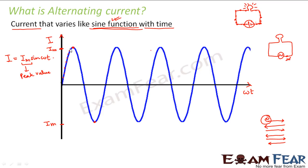The current is changing its magnitude continuously, so we have something called the peak value of current, which tells us that the current is changing its magnitude with time but will vary between two fixed values — it cannot go beyond these. In DC current you have just one current value; in AC current there are a couple of terminologies — for example, peak value of current, RMS current, and average current — which together define the amount of current.